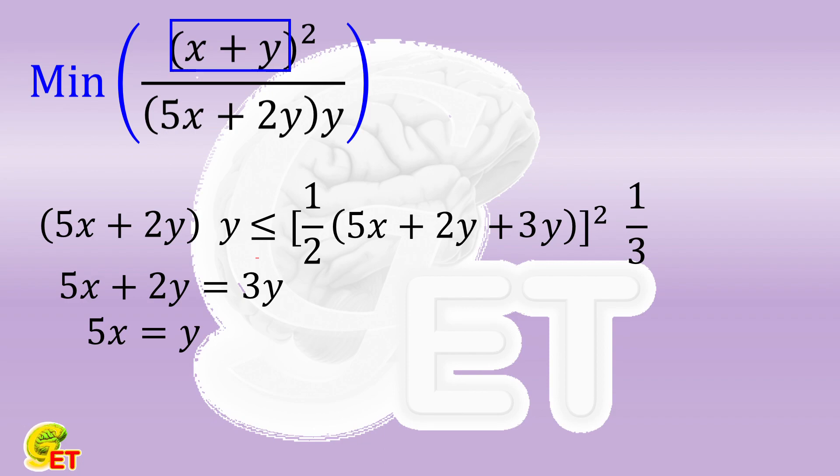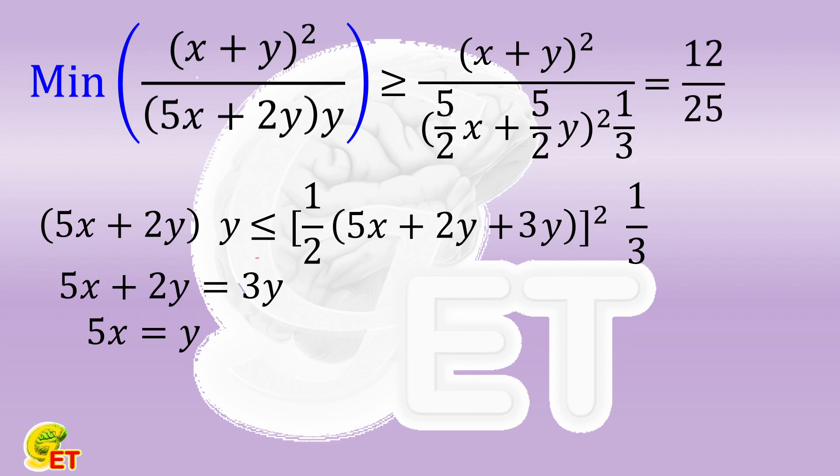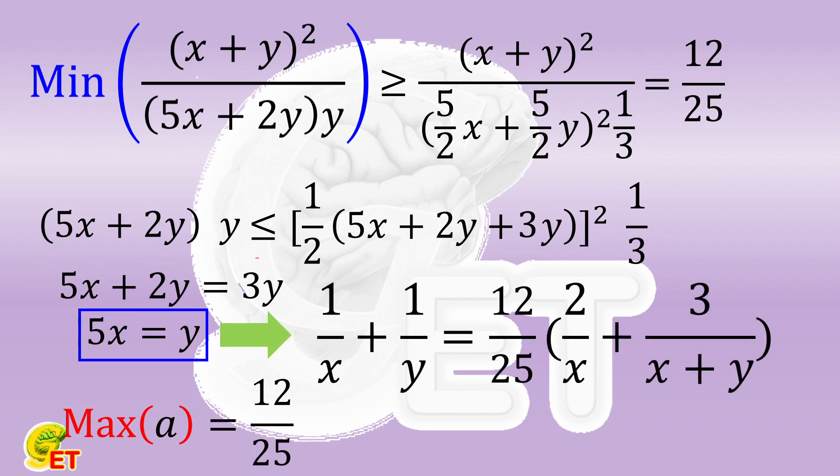Now we bring this resulting inequality back into the expression we want to find the minimum value for and get its minimum value equal to 12/25. That is, the maximum value of a is equal to 12/25, and when y equals 5x, the equality relation is obtained. Thank you for watching, and see you next time.